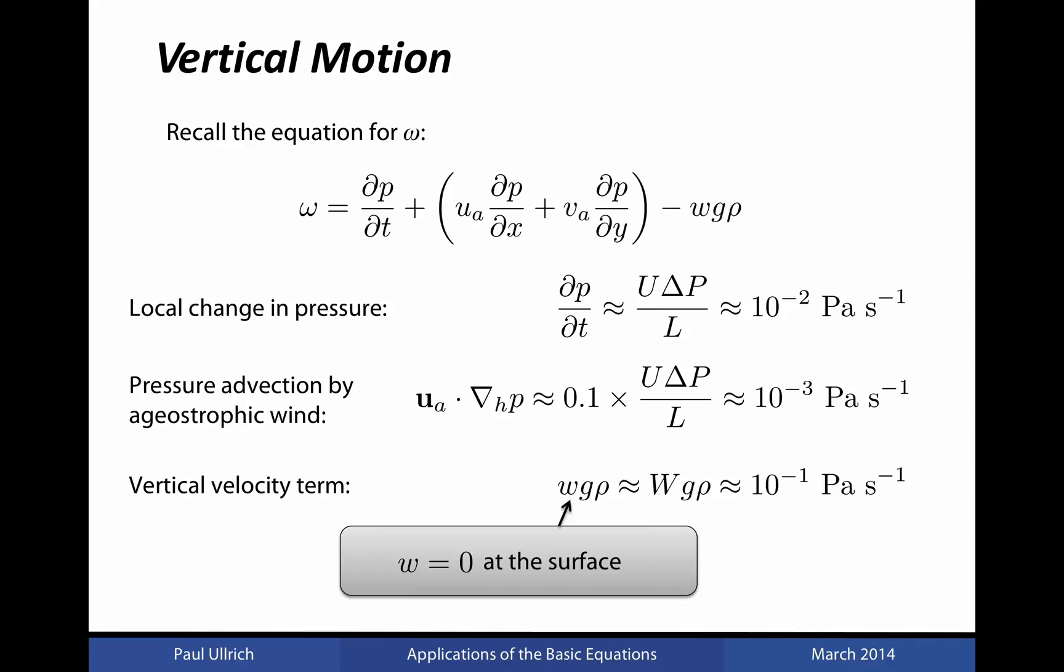And so it turns out that omega effectively describes the Eulerian change in pressure at this point. We'll be using this in order to assess how surface pressure changes in response to changes in omega.